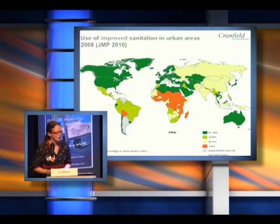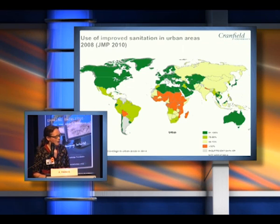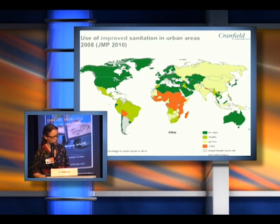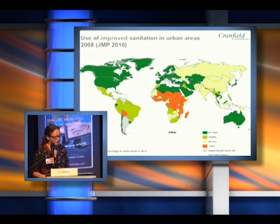Just to give you an idea of the scale of the sanitation crisis: this is a map of the world showing countries' access to sanitation in their urban areas. I particularly want you to focus on the countries shown in red, which are the countries where less than 50% of the population in urban areas have access to improved sanitation — and improved sanitation can just be a simple pit latrine. You can see that most of Sub-Saharan Africa, Nepal, and I think that's Peru or Bolivia in South America, really are in a crisis where so many people do not have access to improved sanitation.